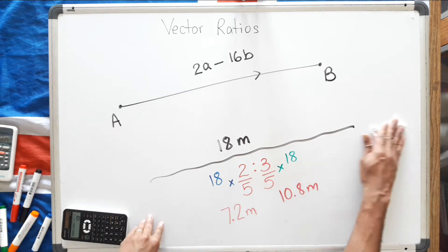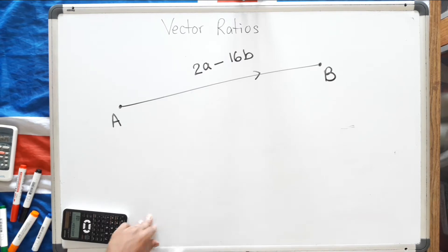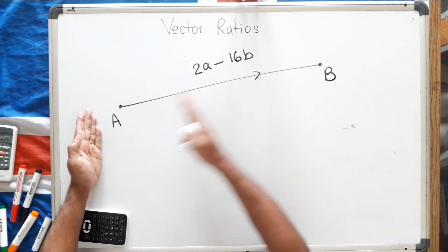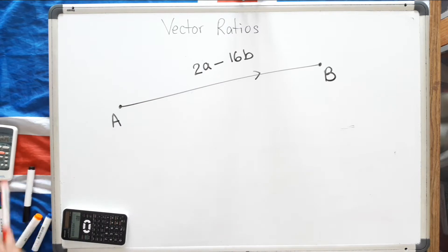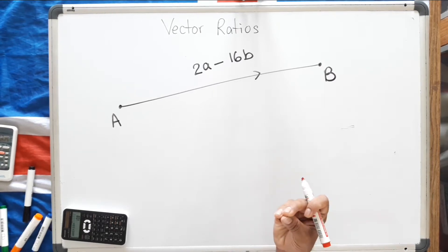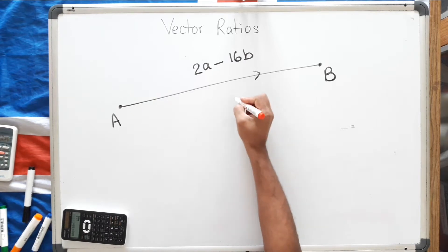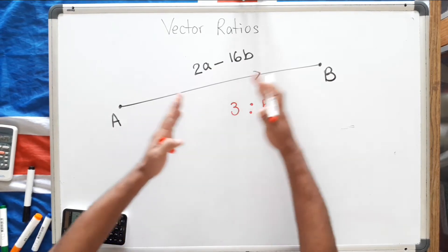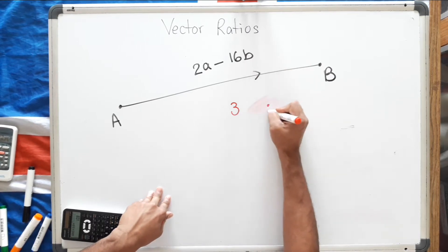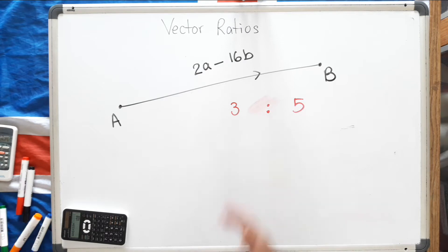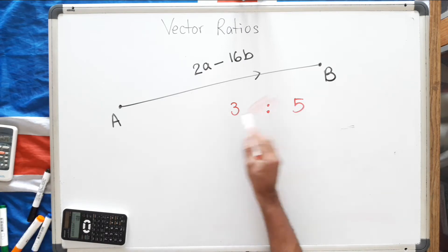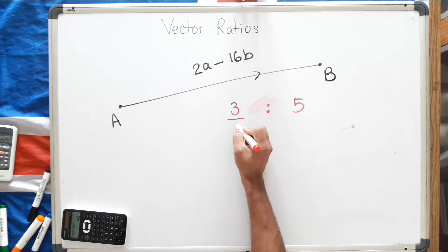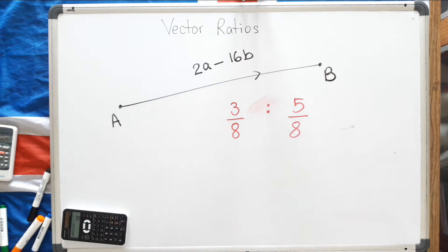Instead of a rope 18 meters long, let's say somebody found a vector — the vector AB — going from A to B, and its value is 2a minus 16b. These two people want to split this vector in a ratio of 3 to 5. It's the same concept — let's convert this to a fraction first. 3 plus 5 is 8, so the denominator is 8.